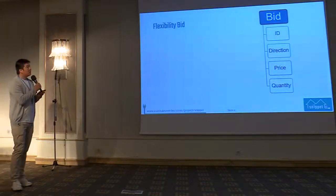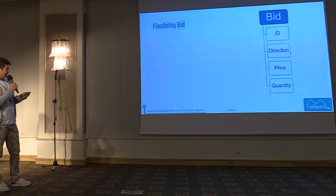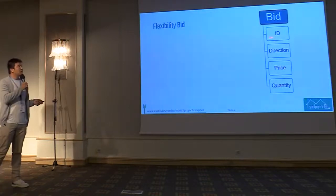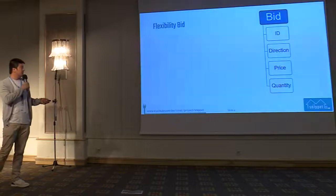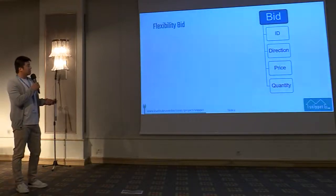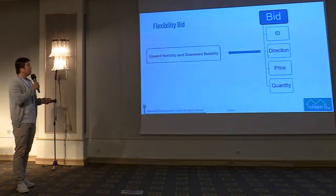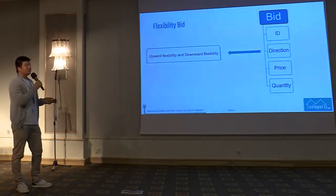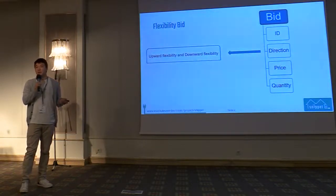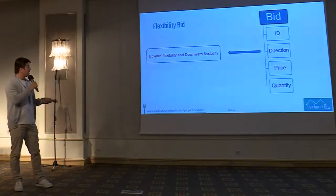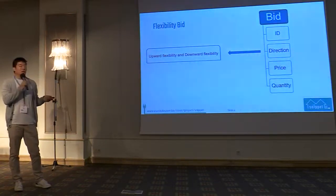When we talk about a bid, what do we expect? First, we have an ID to identify who you are — we cannot send you the money otherwise. Then we have the direction, which is quite easy to understand. For the flexibility bid, we divide it into upward flexibility and downward flexibility, representing decreasing or increasing consumption.